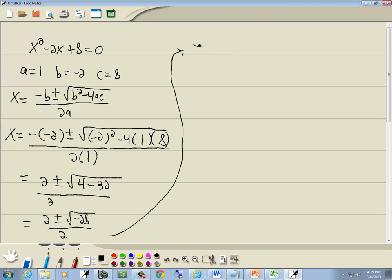Always you should simplify your radicals before you go on. So I've got 2 plus or minus square root, negative 1 times 28 is 2 times 2 times 7, all over 2.